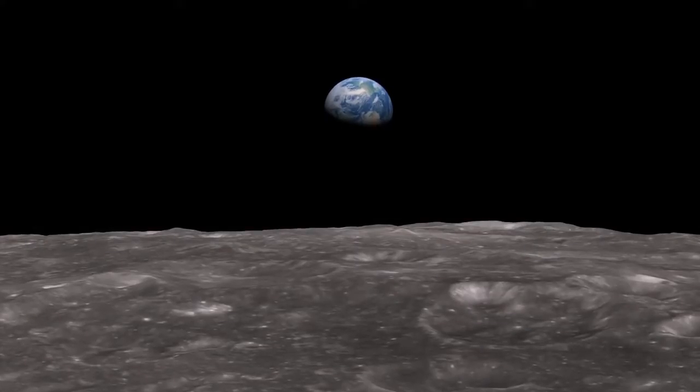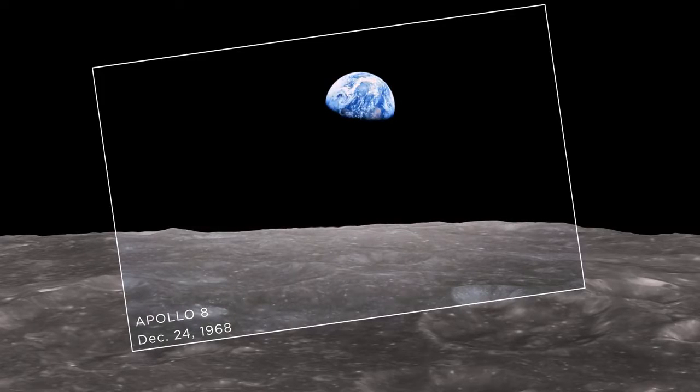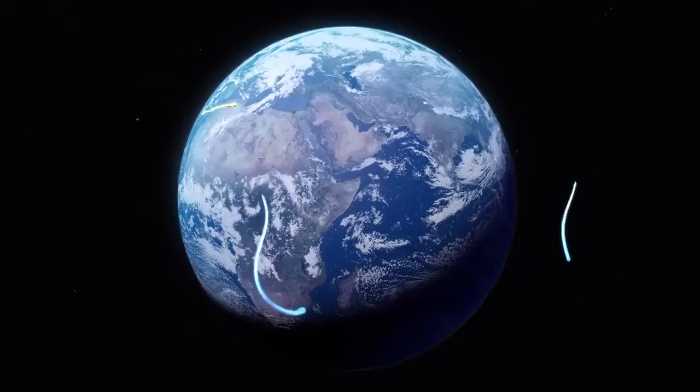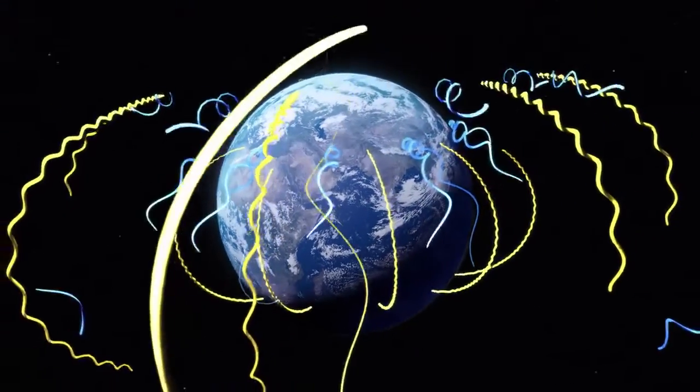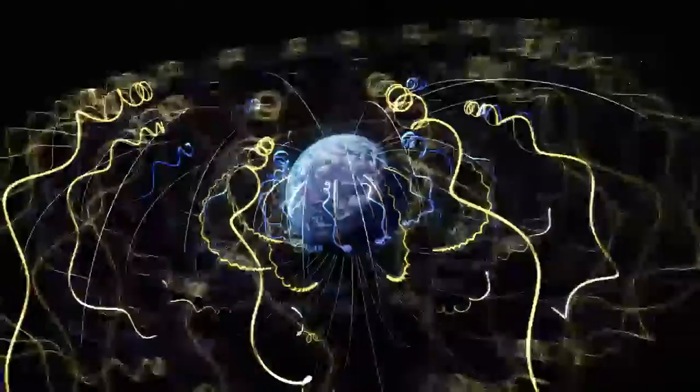Typically, images of our planet from space show a blue-green sphere engulfed by the darkness of space. But invisible to the eye, a vast network of magnetic energy and particles surround our planet.